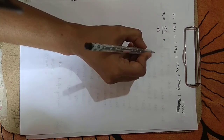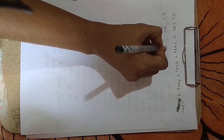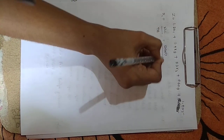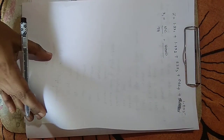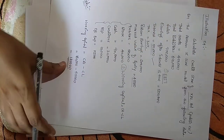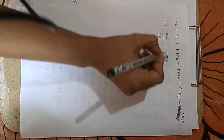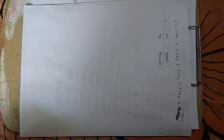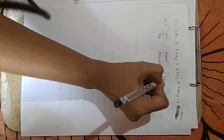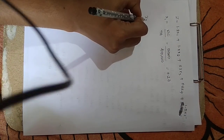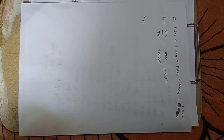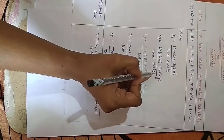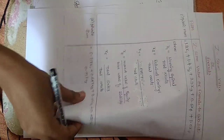For calculating X1, we use working capital divided by total assets. Working capital is 1,25,000 divided by total assets of 4,50,000, giving an answer of 0.27.